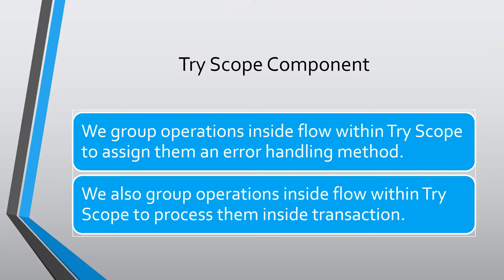In a Mule flow, if we have troublesome operations, we can group these operations and put them inside Try Scope and assign an error handling strategy to the Try Scope. These operations will then run under that particular error handling strategy. We also use Try Scope to process a group of operations inside a transaction.